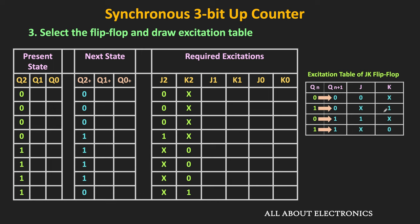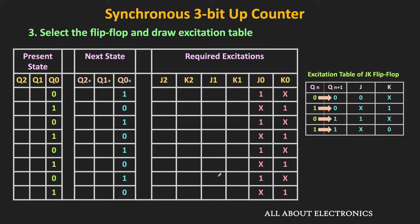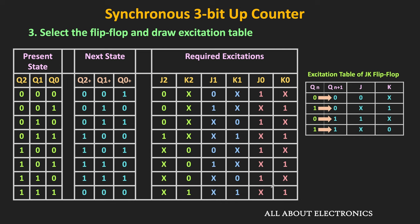Similarly, to find the required excitations for J1 and K1, we consider only the Q1 column, where Q1 shows the present state and Q1+ shows the next state. Using the excitation table of the JK flip-flop, we find the required values of J1 and K1. Likewise, for the Q0 column, Q0 represents the present state and Q0+ the next state, and we use the excitation table to find J0 and K0. You can pause and verify all transitions.